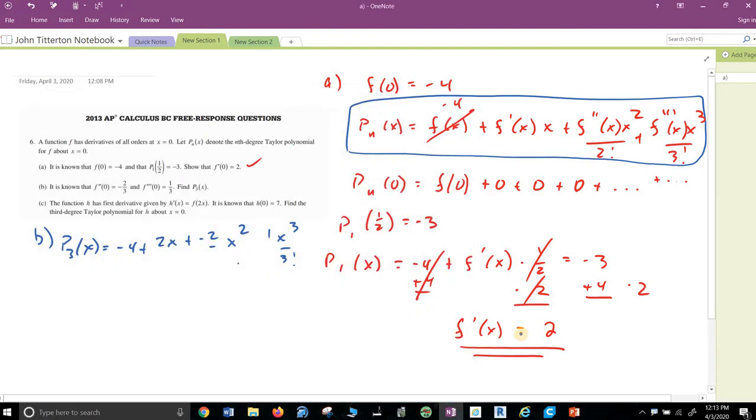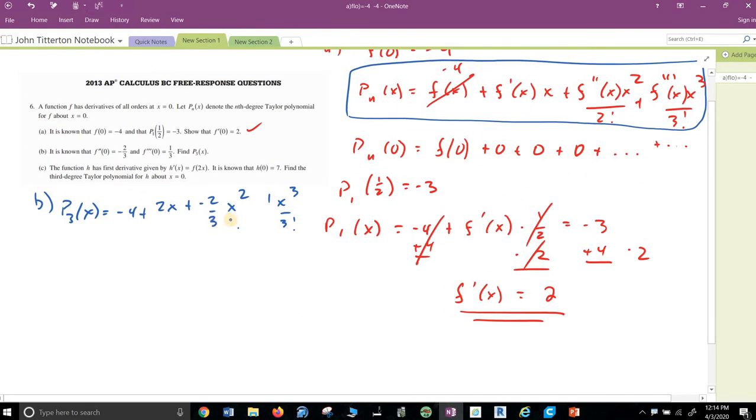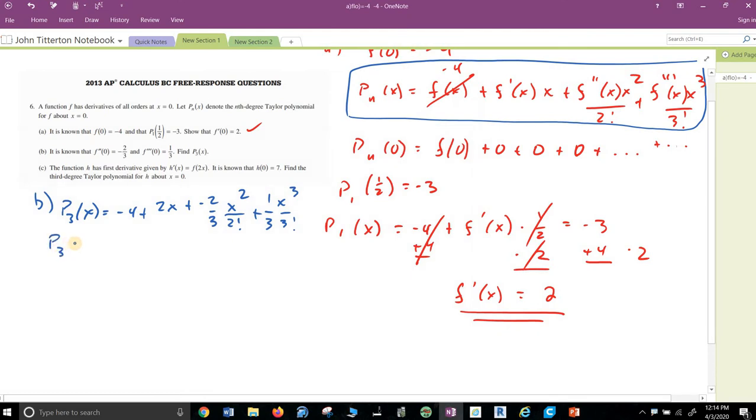P_3 of x we know equals negative four plus two x plus, they say, f second derivative is negative two-thirds x squared over two factorial. And third derivative plus one-third x cubed over three factorial. Come back. Can I come back or not? I guess not. Alright, so I'll write them in. Plus one-third. So P_3 of x equals, I'm not sure I'm doing this right. Yeah that's right. Negative four plus two x. Two's going to cancel. Minus x squared over three. Three times two is six times three is 18 plus x to the third over 18. And that's it for that part.